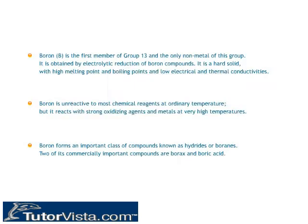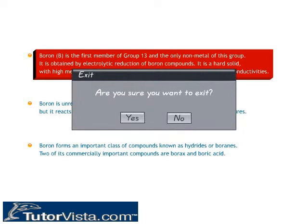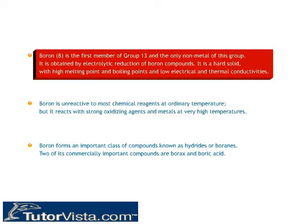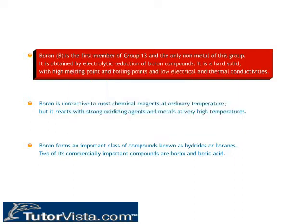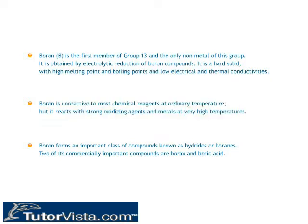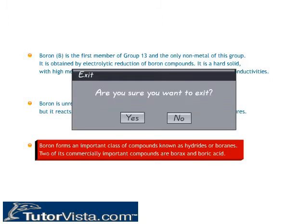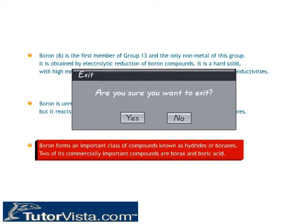Boron (B) is the first member of group 13 and the only non-metal of this group. It is obtained by electrolytic reduction of boron compounds. It is a hard solid with high melting and boiling points and low electrical and thermal conductivities. Boron is unreactive to most chemical reagents at ordinary temperature, but reacts with strong oxidizing agents and metals at very high temperatures. Boron forms an important class of compounds known as hydrides or boranes, and two of its commercially important compounds are borax and boric acid.